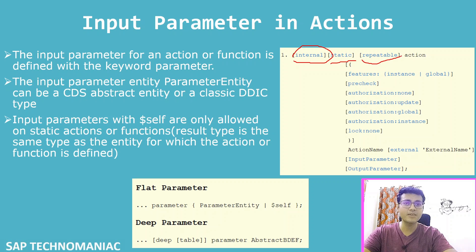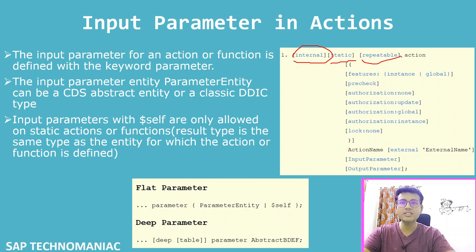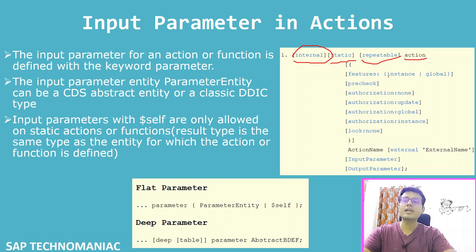Whenever you define the action as repeatable, the importing parameter of the action will have the %CID, which will differ each time when you trigger this particular action. Then you have to use the action keyword. If you want to define that your action should be enabled or disabled based on some condition, you have to use the feature control for your action.